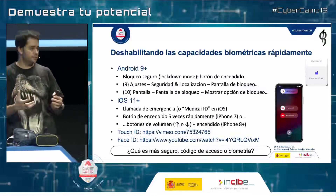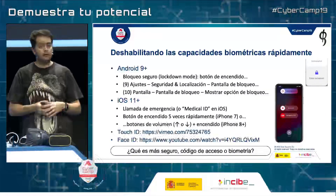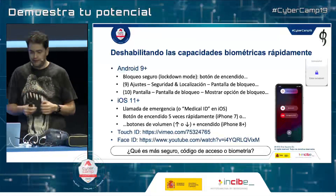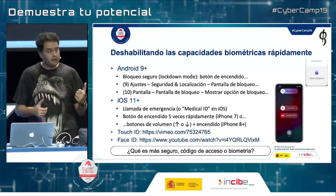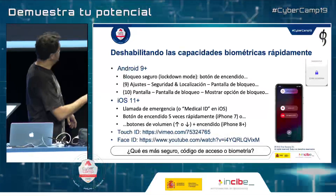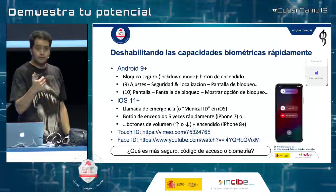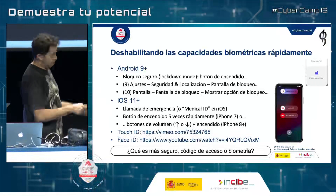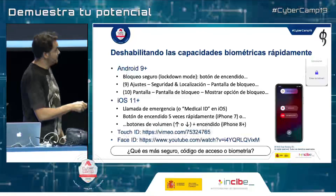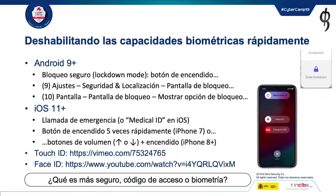For example, the first time you start your phone you cannot use biometrics; if you have five failed attempts you cannot use it either. In iOS, this is associated with emergency services. Depending on whether you have an iPhone 7 or higher, if you press the start button five times you get an emergency screen — be careful not to call emergency services, but if this screen appears, you have already disabled your biometric option. On newer iPhones you can also do it with the volume up and down buttons.